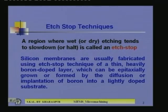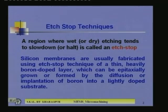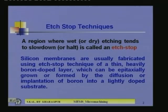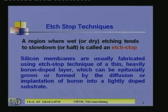There are certain techniques that give automatic etch stop mechanisms. These are of two kinds: bias dependent etching and doping selective etching. Etch stop is basically defined as a region where wet or dry etching tends to slow down or halt. It may not be completely stopped, but slowed down in a drastic way — that is also called etch stop.